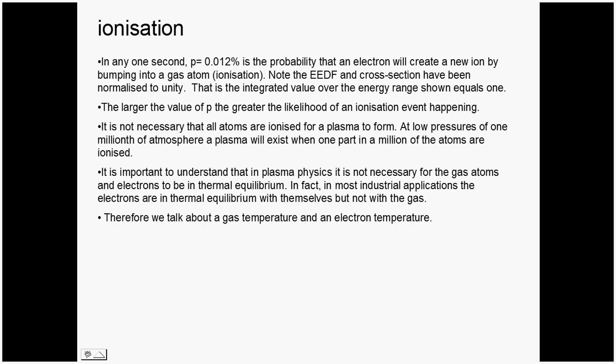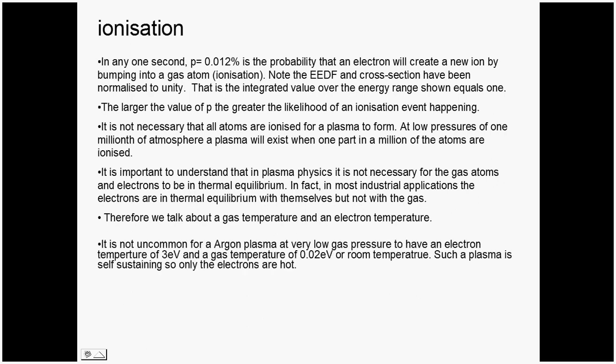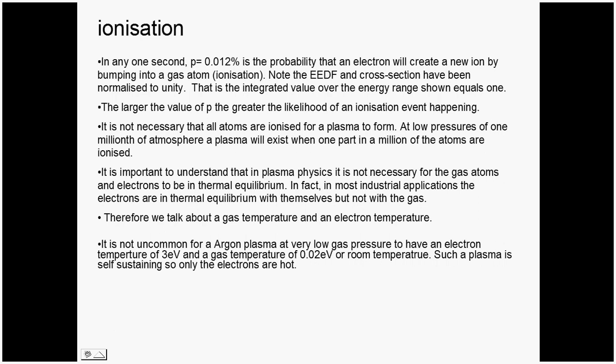So we talk about two temperatures, and maybe even three temperatures in an industrial plasma. We talk about the gas temperature and the electron temperature. And so, as I said, it's not uncommon to see in a low-pressure argon plasma that you would have an electron temperature of 3 eV and a gas temperature of 0.02 eV.